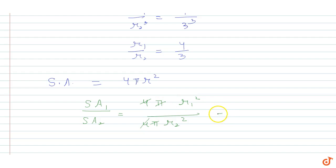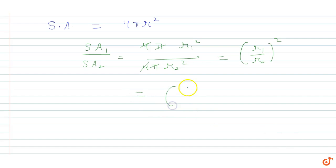This simplifies to (r1 / r2)². Since r1 / r2 = 4/3, we get (4/3)² = 16/9. So the ratio of the surface areas is 16 to 9.